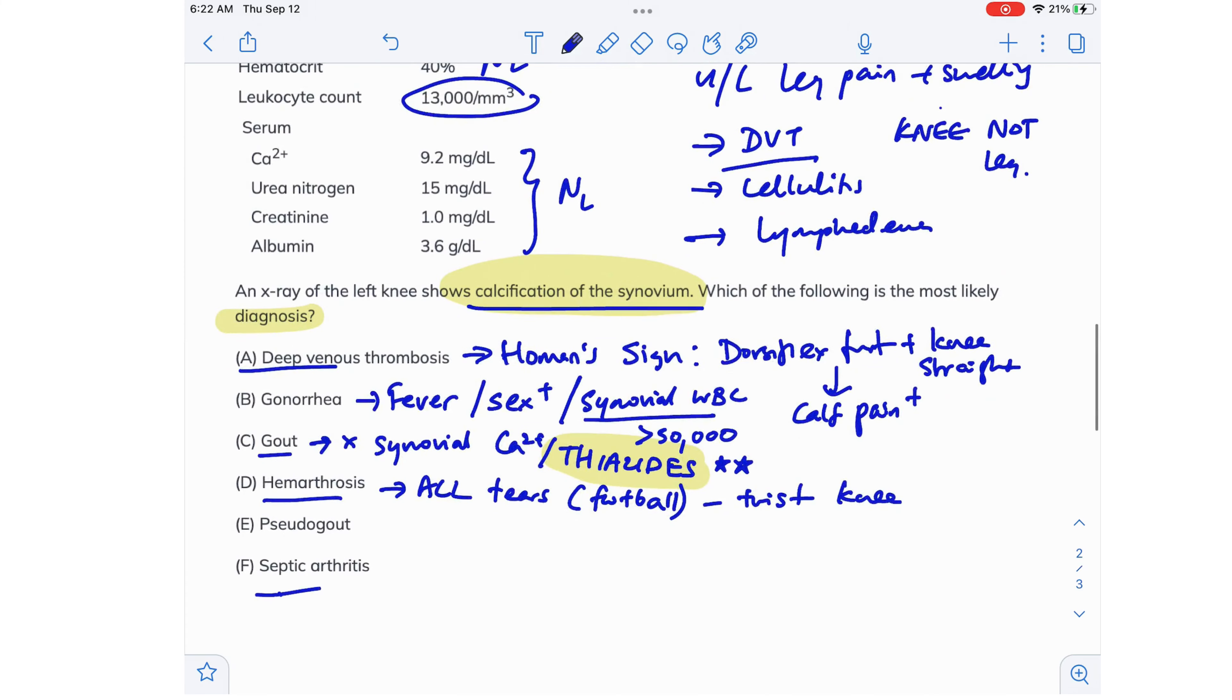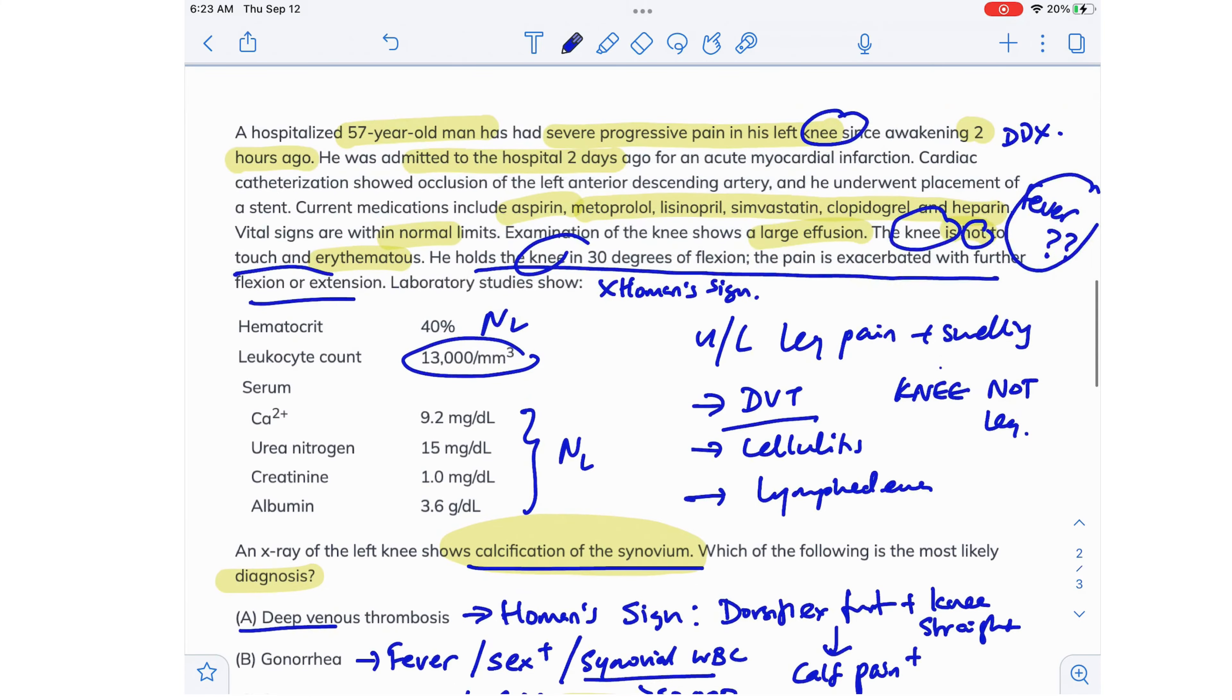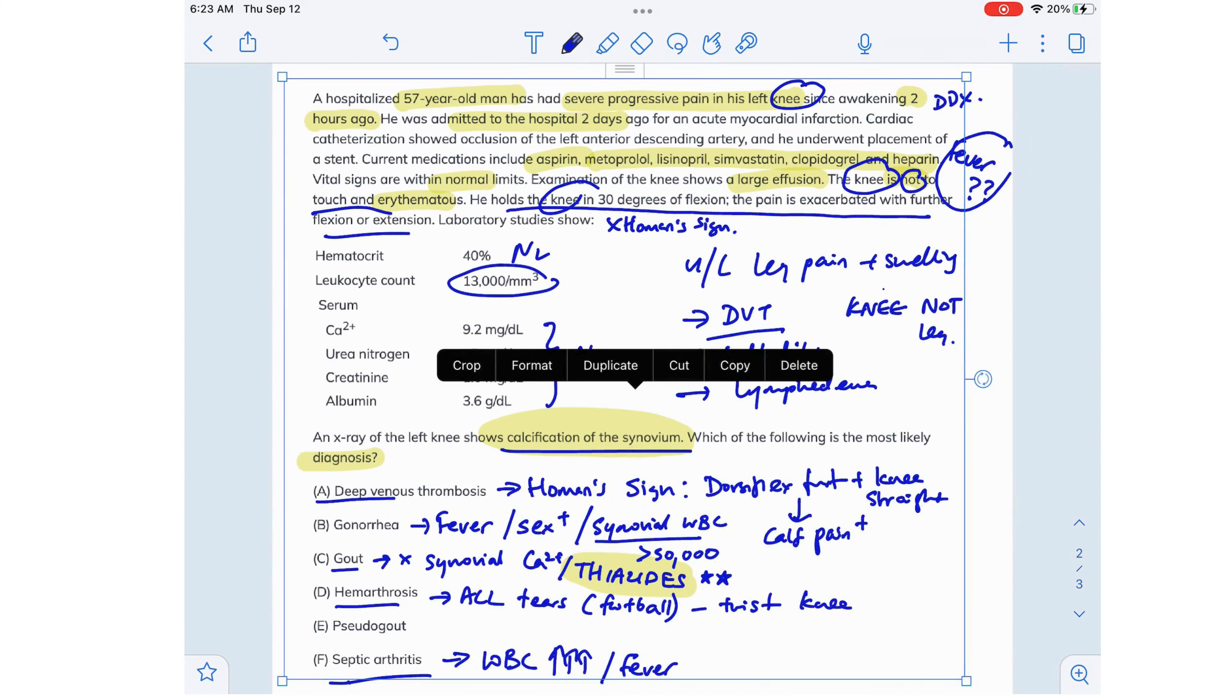Then option E, septic arthritis. Again, the white cell count is only slightly elevated in this question. We would expect a very high white cell count in the case of septic arthritis. And also the patient would have a high fever, but the question doesn't say anything about a fever like I mentioned when it came to gonorrhea.